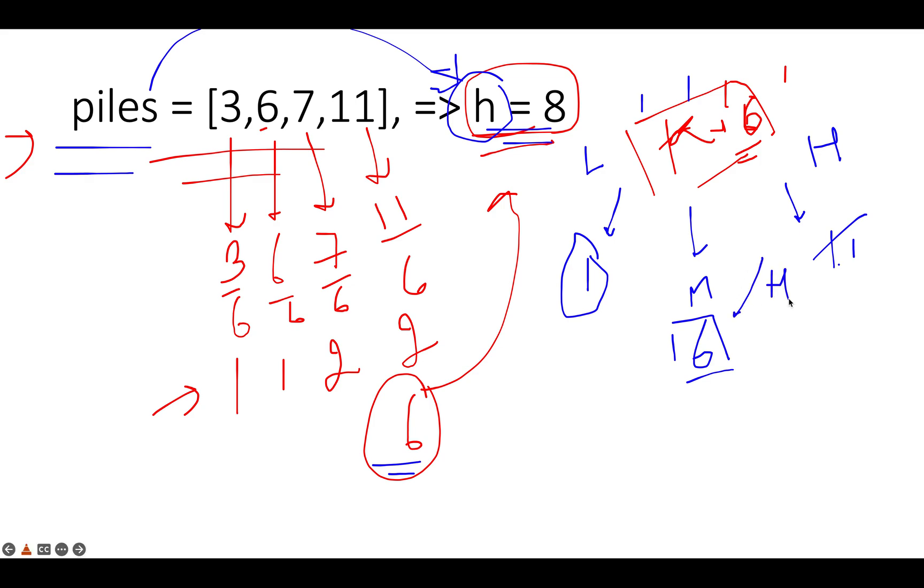And let's repeat the process. We have low as 1, high as 6. What is the middle value? The middle value turns out to be 3. Let's calculate the number of hours it takes corresponding to k as 3. So 3 by 3 gives me 1, 6 by 3 gives me 2, 7 by 3 gives me 3, 11 by 3 gives me 4. What is the total sum of these? 1 plus 2 is 3, 3 plus 3 is 6, 6 plus 4 is 10. It takes 10 hours if the value of k happens to be 3. So it has violated the condition, the upper limit of h which is 8. What do we do in such case? We increment the low pointer to mid plus 1, so low gets updated to 4.